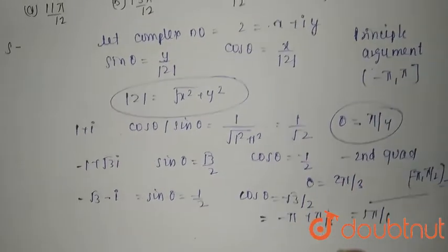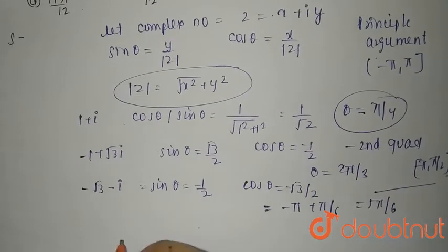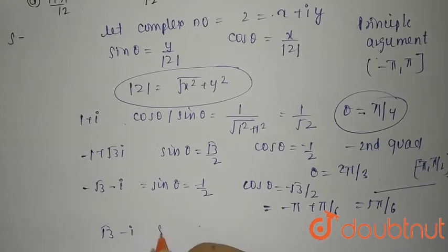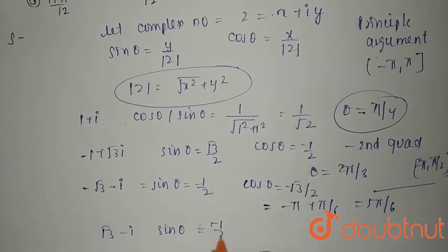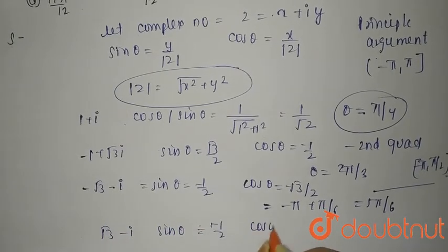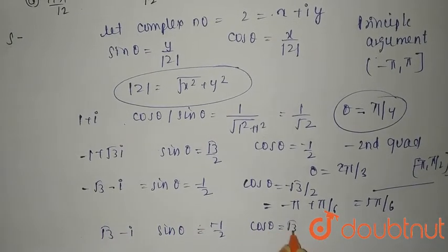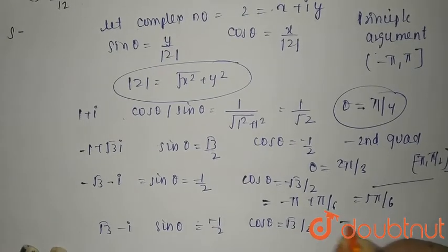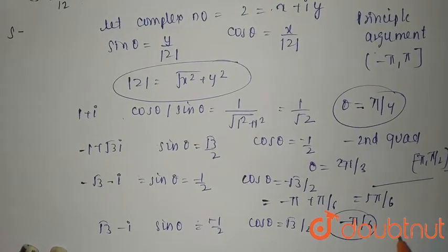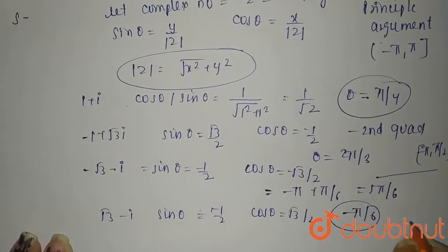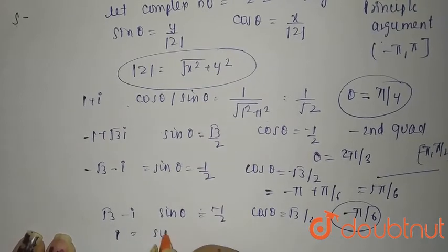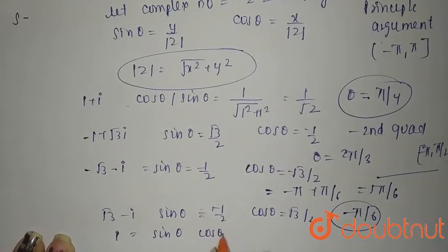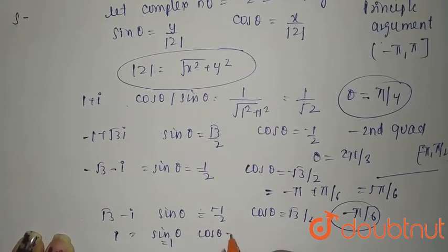For √3 − i: sin θ = −1/2 and cos θ = √3/2. This lies in the fourth quadrant, with the value between −π and π, so θ = −π/6.